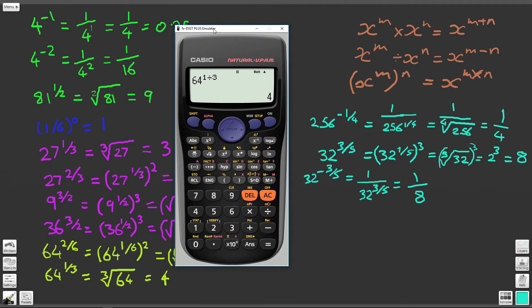Next let's have a look at this. 256 to the power of minus 1 quarter. So 256 to the power of minus 1 quarter, we should get 1 quarter. And indeed we do.